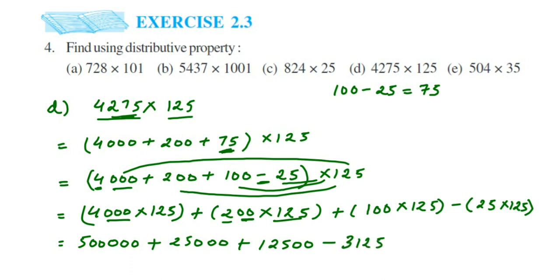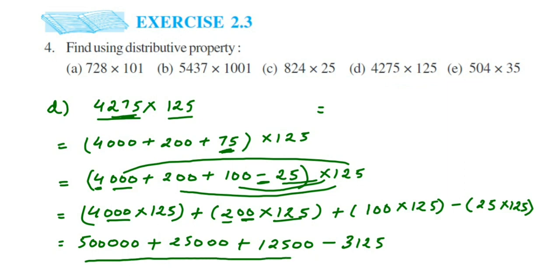Now you have to add these numbers and then subtract 3125. The final answer will be 534375. I am not doing the addition and subtraction step by step here because the video is already 10 minutes long. I hope you know how to do the addition and subtraction — you can do this at home.